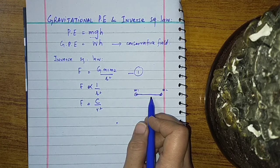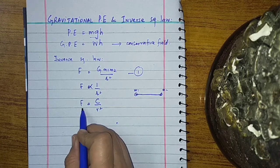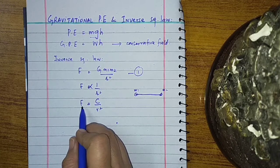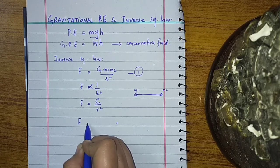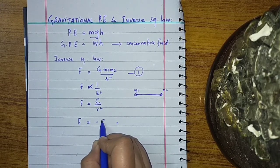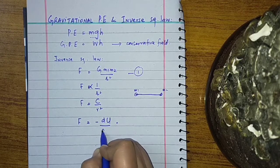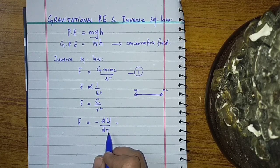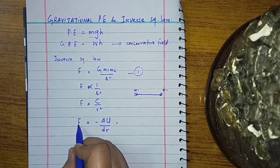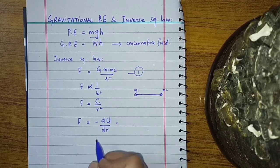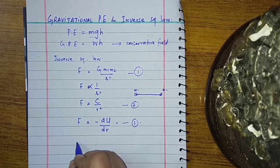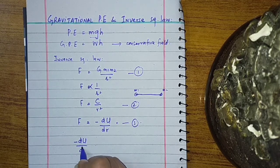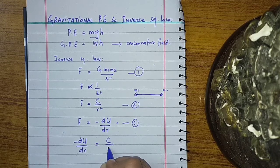We also know that this force F — Newton's gravitational force — can be expressed as the negative gradient of the potential energy. So if F is also equal to C over R squared, combining these two equations gives us: minus dU over dR equals C over R squared.